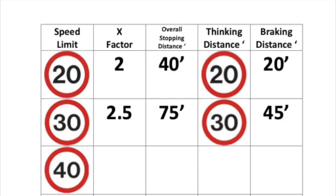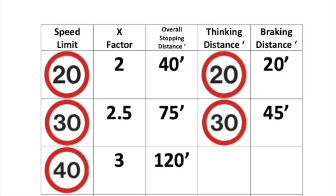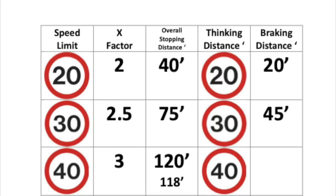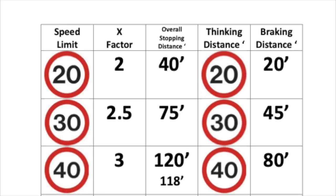Next we have 40 miles an hour. We multiply that by 3, giving us an overall stopping distance of 120 feet. Now the official answer is 118 feet and I don't know why it's two out, but there it is. This won't cause you a problem on the actual theory test though, as you'll just pick the answer that's closest to 120 feet. We will base the braking distance calculation on 120 feet for consistency. So we take the thinking distance of 40 feet — 120 feet minus 40 feet equals a braking distance of 80 feet.